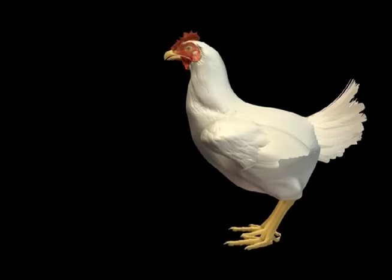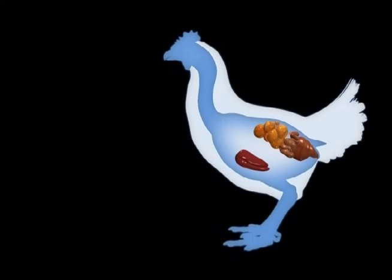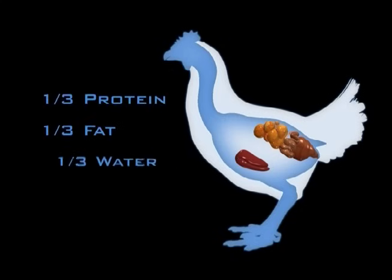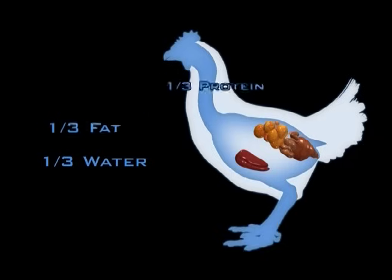When a hen is actively laying, nutrients from the food she eats are converted into the building blocks of egg yolk. These building blocks, one-third protein, one-third fat, and one-third water, are then carried by the bloodstream from the liver to the ovary.